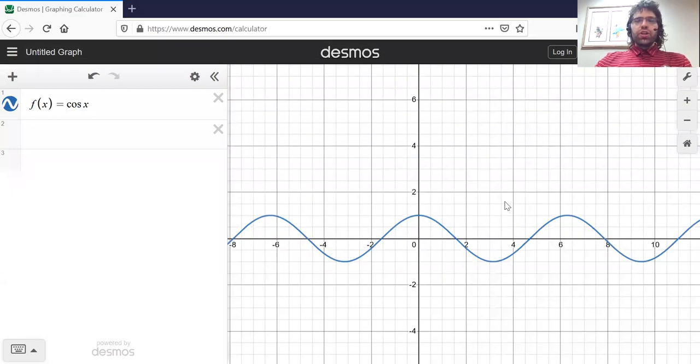Here is the cosine. It has all the properties that the sine had.